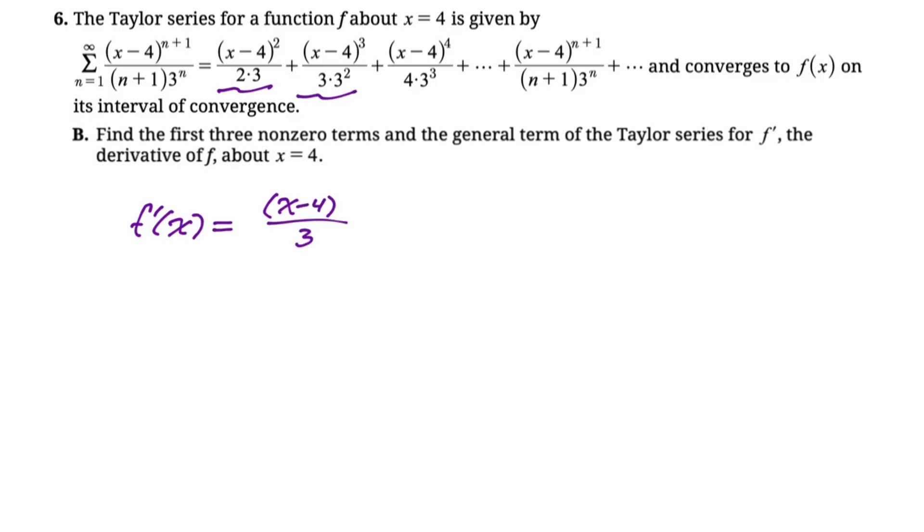And then for our second term, power rule this thing. So bring down the 3, cancel the 3s, you get x minus 4 squared over 3 squared. Do it for this one. Bring down the 4, cancel the 4s, x minus 4 to the 3rd over 3 cubed. And you can see there's really a pattern going on here. Got to do the same thing for the nth term. Bring the n plus 1 down. Subtract 1 leaves you with n. Cancel the n plus 1s. So we just get x minus 4 to the n over 3 to the n. And that's all we had to do in this part.